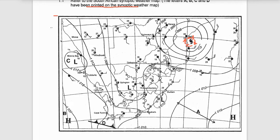You know that this tropical cyclone originates from the Indian Ocean — the warm Indian Ocean. So it's moving like this, and when it reaches places like Mozambique or the coastal eastern part of the African continent...